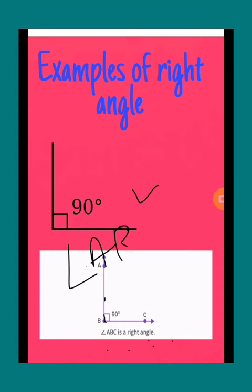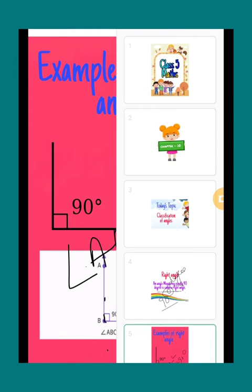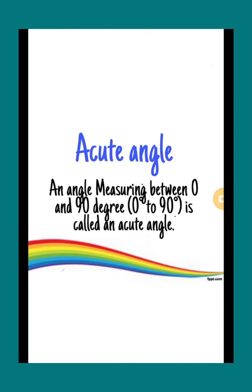Next is acute angle. An angle measuring between 0 and 90 degree, means greater than 0 and less than 90 degree, are called acute angles.